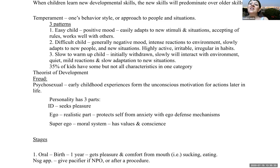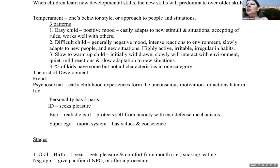The difficult child generally has a negative mood, intense reactions to the environment, and slowly adapts to new people and situations. They tend to be highly active, irritable, and irregular in their habits. The slow-to-warm-up child is initially withdrawn and then slowly interacts with the environment. They tend to be quiet, have mild reactions, and show slow adaptation to new situations.